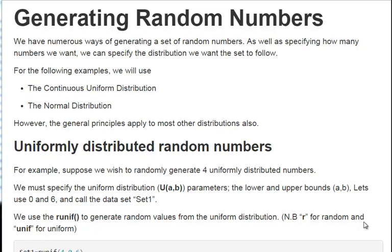Uniformly distributed random numbers. Let's suppose we want to generate four uniformly distributed values. So what we first do is specify that we want to use the uniform distribution, and that's commonly denoted U, capital U there, with the parameters a,b, with the upper and lower bound specifically, so it's the minimum and maximum. And what we're going to do is set the lower and upper bound as 0 and 6, and we're going to call this data set set 1. The command we're going to use here is called runif.